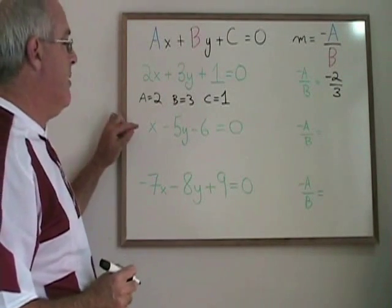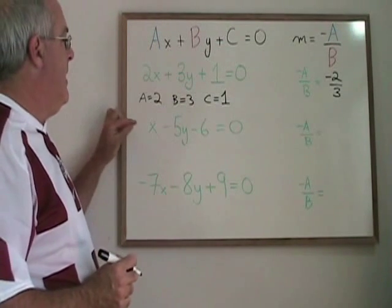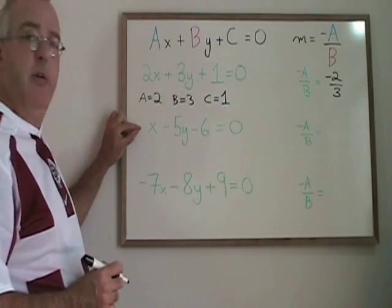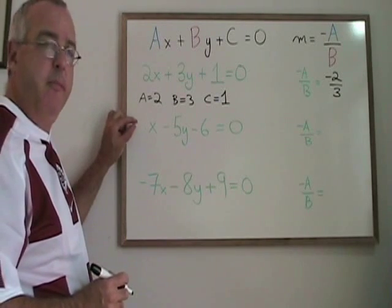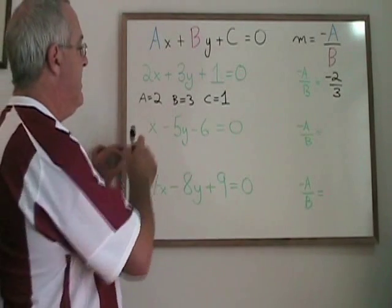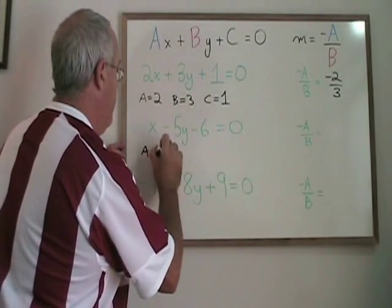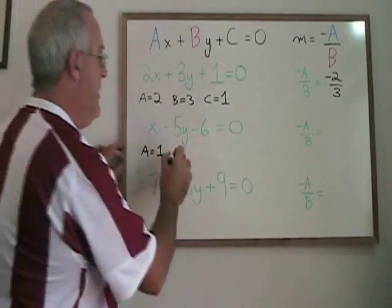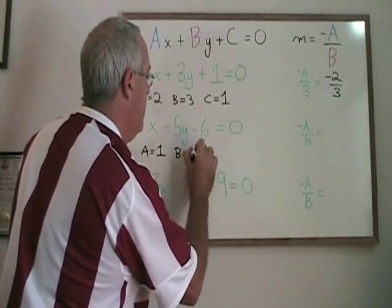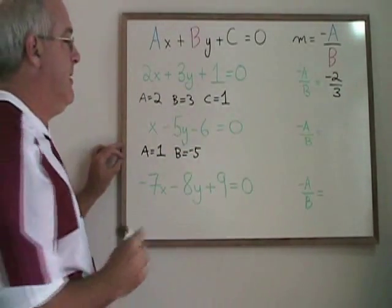In the second equation, we have some minus signs, and the first term, the x, does not have a number with it. We have to realize that x means 1x, so a is equal to 1. b is equal to negative 5, and c is equal to negative 6.